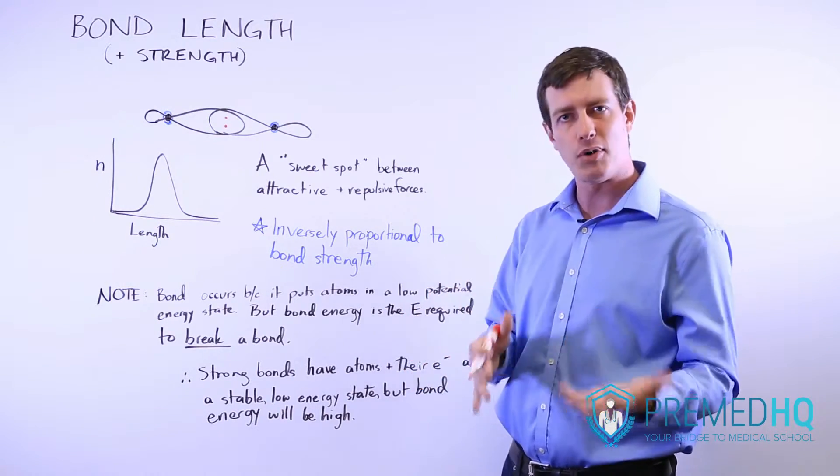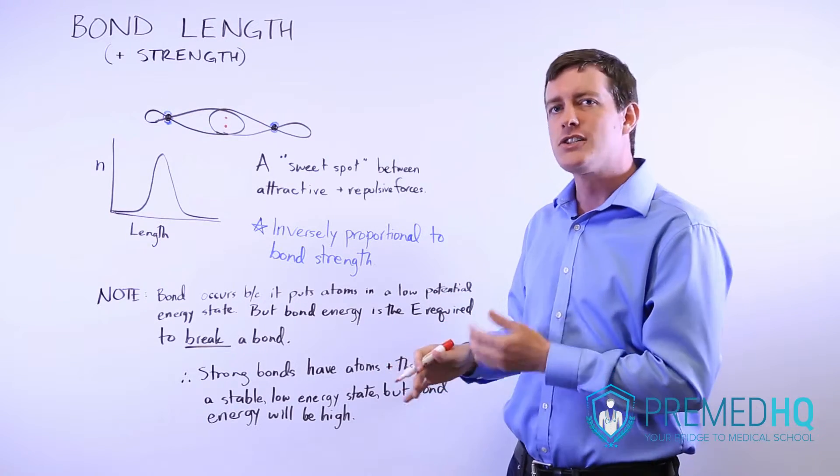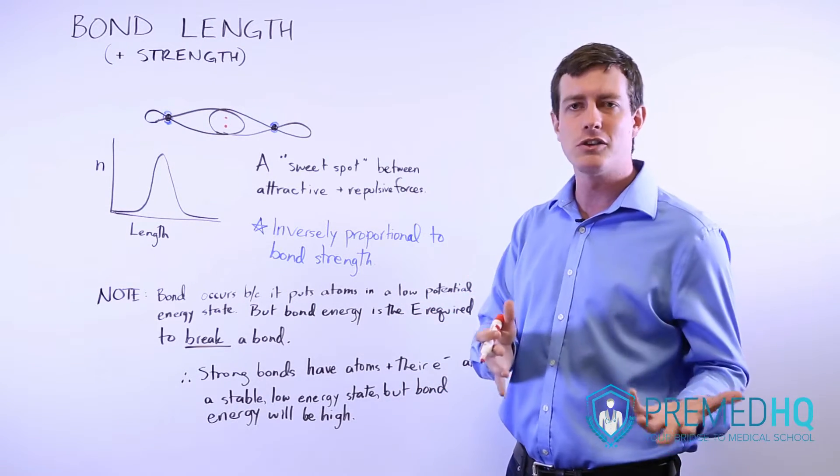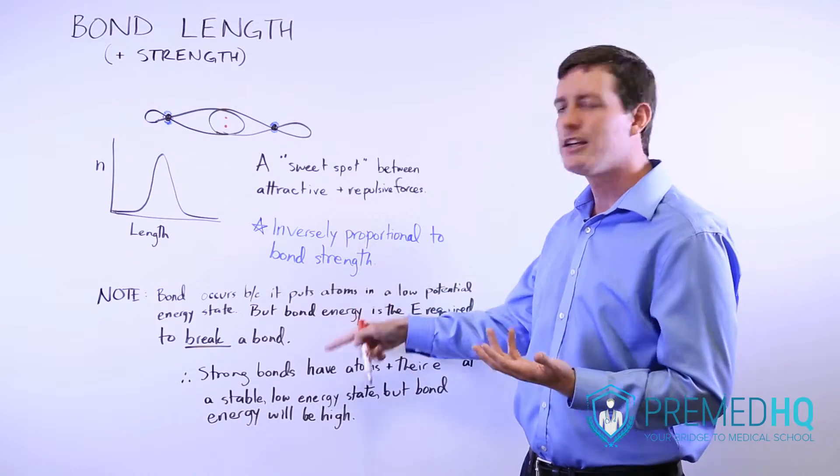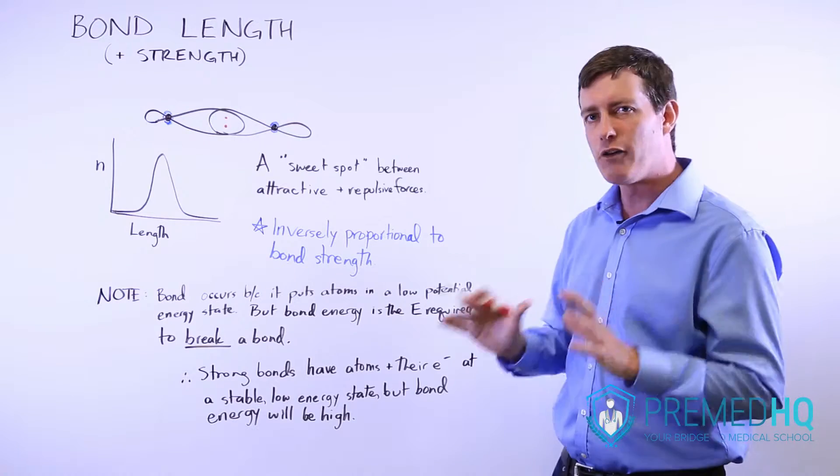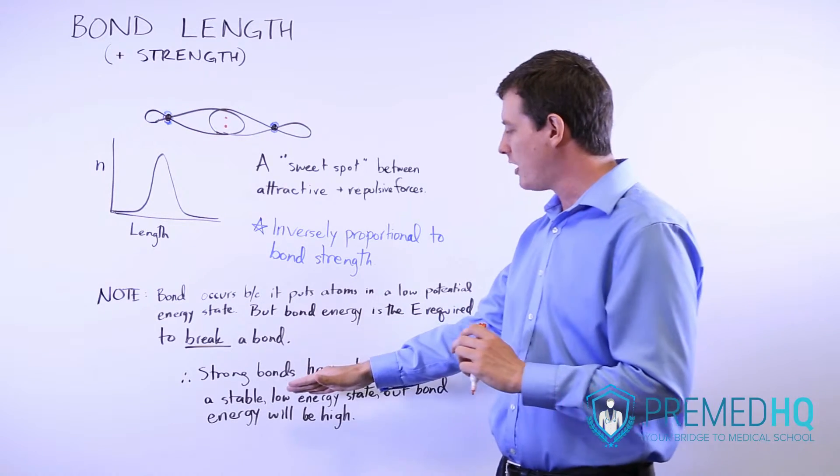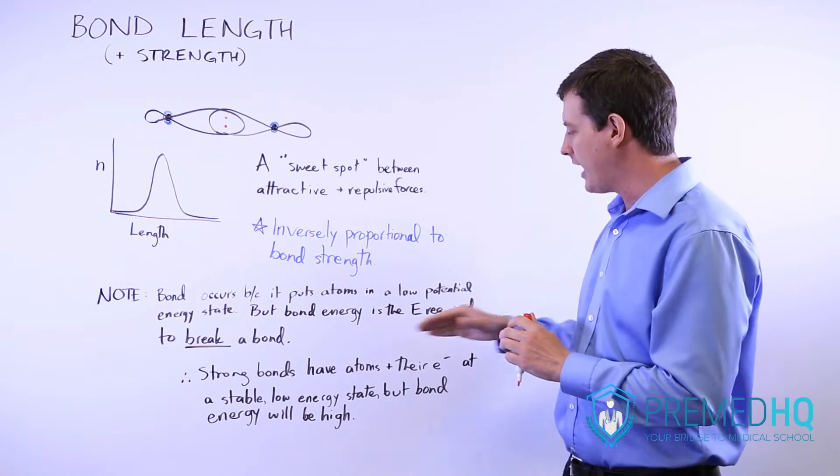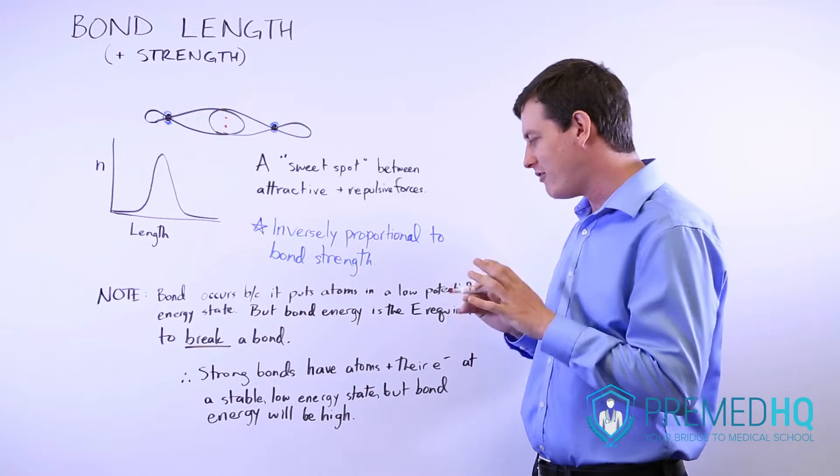Sometimes when you're working through questions, you will see questions that try to hit on this distinction between potential energy and bond energy. Realize that a strong bond has atoms and the electrons of those atoms that are in a very low energy stable state.